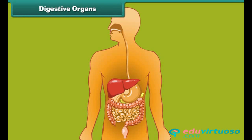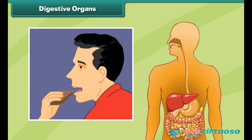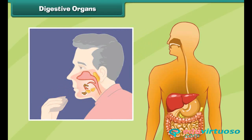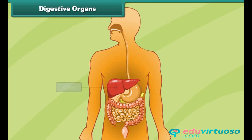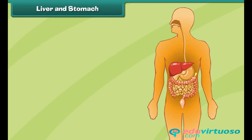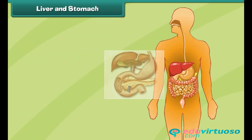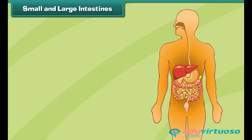Like machines, the human body also requires fuel to perform work — the food we eat every day serves as this fuel. The food eaten by a human being is broken down into smaller pieces to obtain energy, and this process is called digestion. Some main organs that help in digestion are the liver, stomach, small intestine, and large intestine. The liver is a secretory organ that produces juices to aid digestion. The stomach is a J-shaped muscular organ that stores chewed food brought in by the food pipe, where food is digested with the help of enzymes and acids.